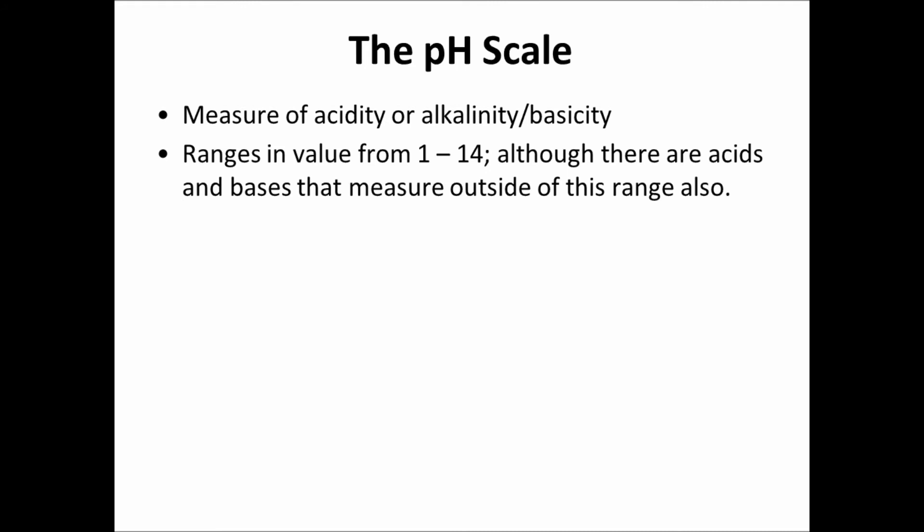The pH scale ranges in value from 1 to 14, although there are acids and bases that measure outside of this range also. It is possible to have an acid with a pH of less than 1. In fact, you can even have an acid with a negative pH. For bases, you can have values that are greater than 14. But for the most part, most of the things that we deal with do fall between this range, and this is the range that we're able to measure accurately with indicators that we would use in a chemistry classroom.